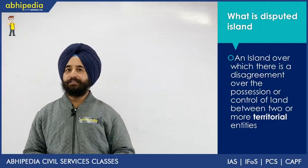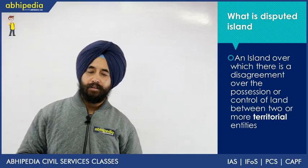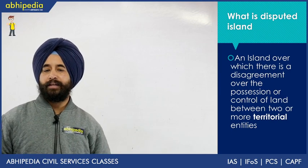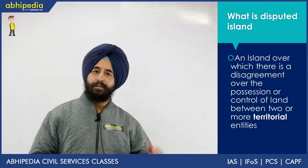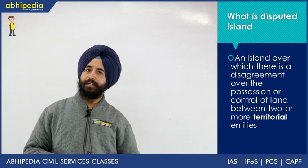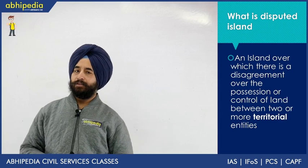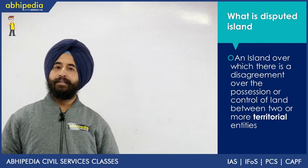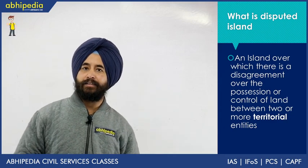Hello friends, welcome to Obipedia. We have started a series on disputed islands and have covered around 7 or 8 disputed islands. Today we will cover the disputed islands of Abu Musa and the Greater Tunbs.